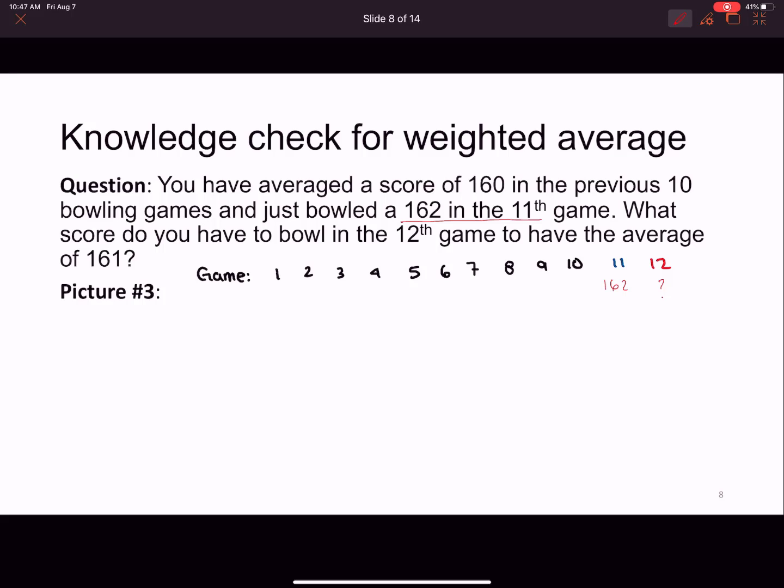However, for the sake of this problem, we can just assume that they're all 160 because the average is going to come out to be the same. Anyway, it doesn't matter. So we go ahead and we're going to write 160 down underneath all of these. Right. Even though it's not 100% right, it's good enough for the problem that we're doing. It's good enough for our situation here. So we're going to put 160 for the first 10 games. The 11th game got 162. Now we're trying to figure out the 12th one. And I want the average, the total average to come out to be 161.